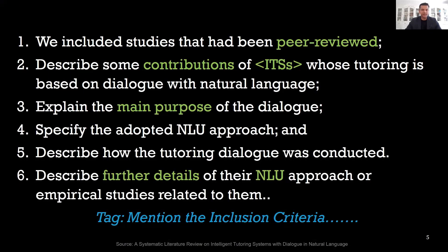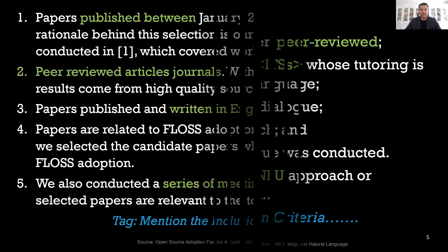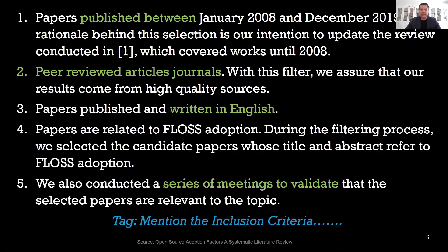For example, looking at this paper, one criterion is that only peer-reviewed papers would be included as primary studies. Another criterion is that they describe some contributions to your topic — in this case, intelligent tutoring systems — specifying the adopted NLU approach and describing how the tutoring dialogue was conducted.